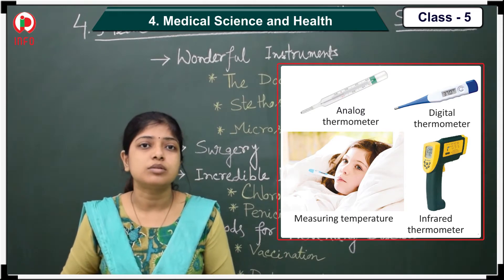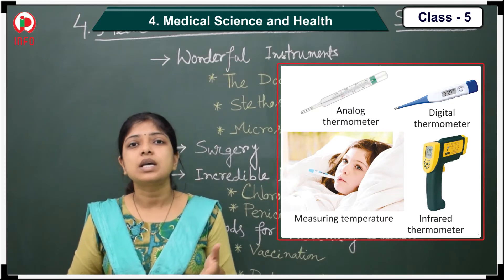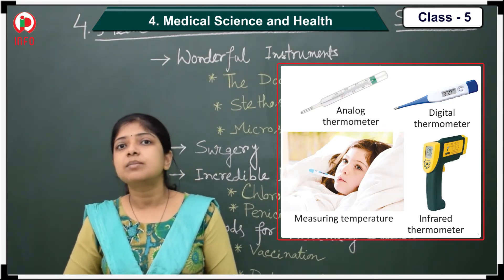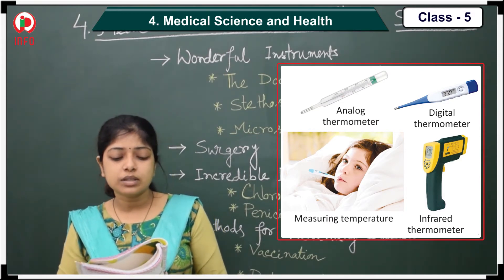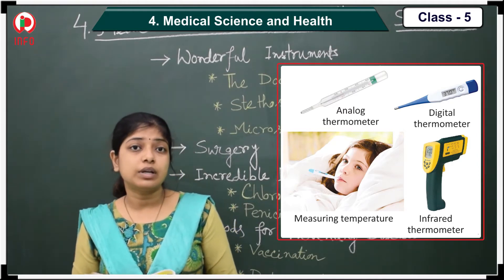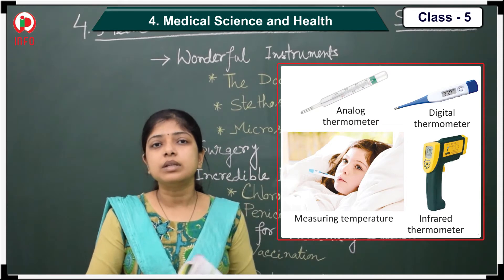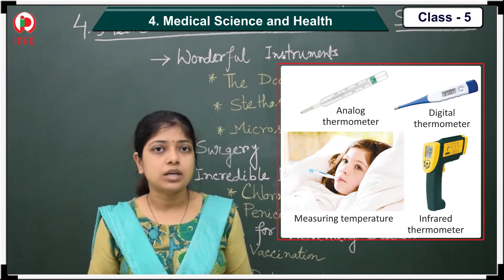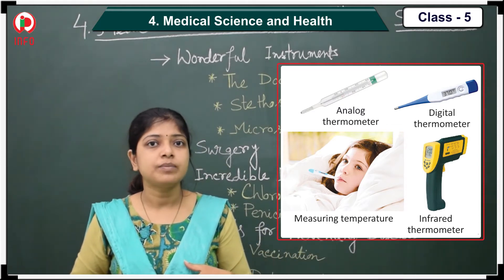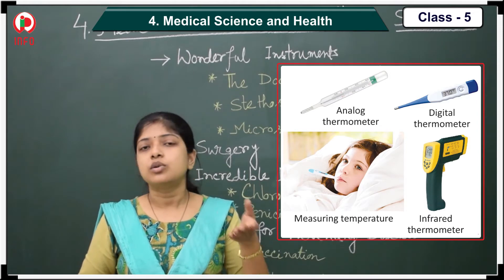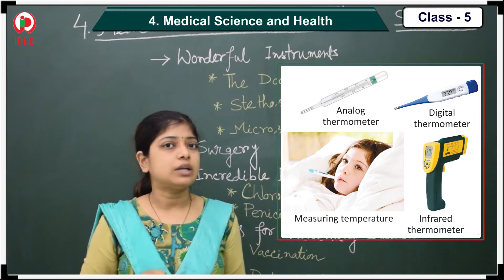But there is a problem also. The mercury, which I told you about, is very toxic in nature. And sometimes it happens that the thermometer breaks — it falls down from our hand very frequently and breaks. On that time, we have to buy again a new thermometer, and that is a little bit costly also. That's why nowadays we are not using those kinds of thermometers.